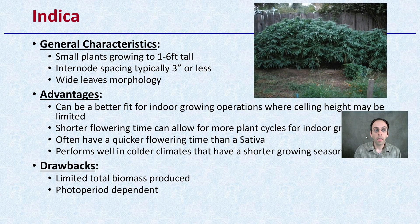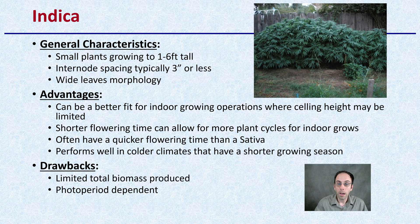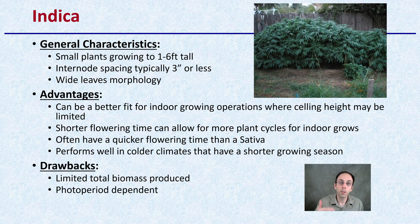Indicas tend to be smaller plants, only about 1 to 6 feet tall, with internode spacing of 3 inches or less and wide leaf morphology. The advantage is they fit indoor growing operations with limited ceiling height, have shorter flowering times allowing more plant cycles, and perform well in colder climates with shorter growing seasons. However, the drawback is the total biomass produced may be reduced overall, and this is another photoperiod-dependent strain.